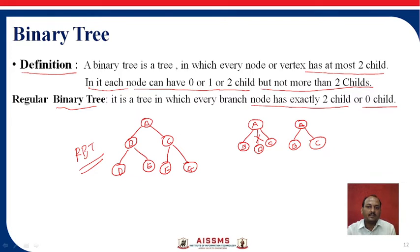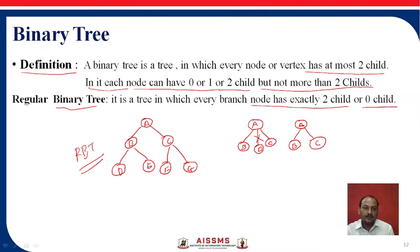To summarize: a binary tree is a tree in which every node or vertex has at most 2 children. Each node can have 0, 1, or 2 children but not more than 2. For a regular binary tree, every node must have exactly 2 children or 0 children.